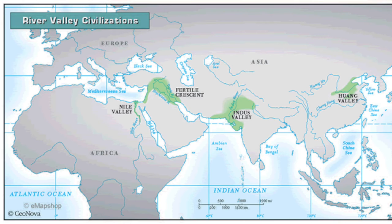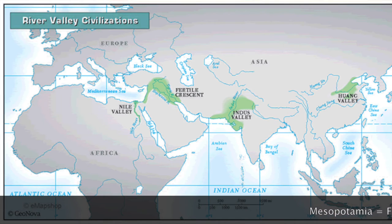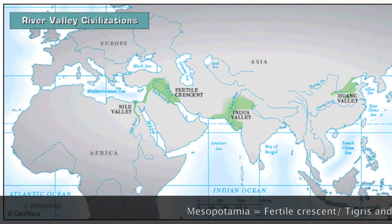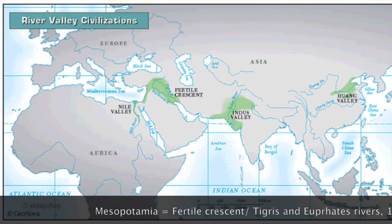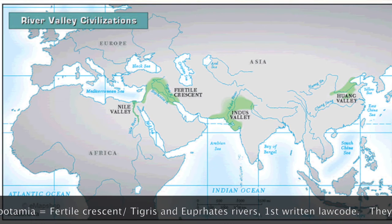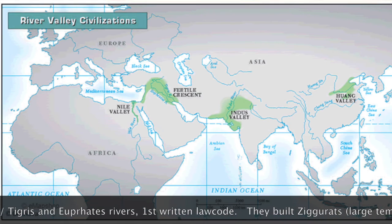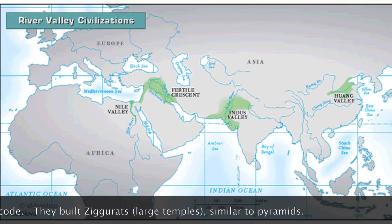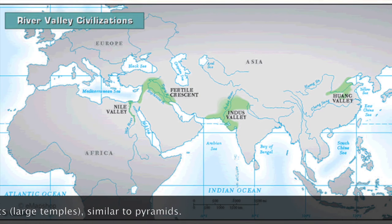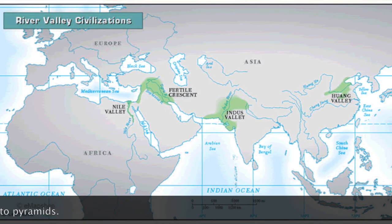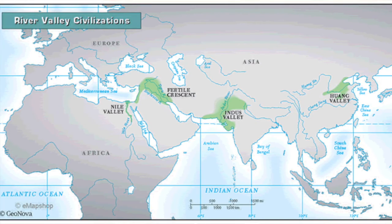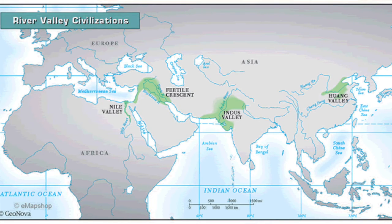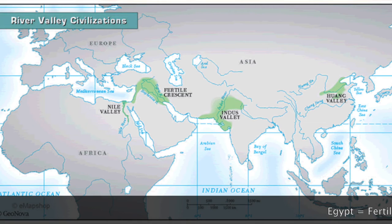Next up is the location of river valley civilizations. The first one is Mesopotamia — that part of the Fertile Crescent that we today call Iraq. Mesopotamia means the land between two rivers, and the rivers we're talking about are the Tigris and the Euphrates. One of the most important things Mesopotamia gave us was the first written law code, Hammurabi's Code. They also built ziggurats, which were those really big temples that looked almost like pyramids in ancient Egypt, and they even traded with other civilizations like the Indus Valley civilization.